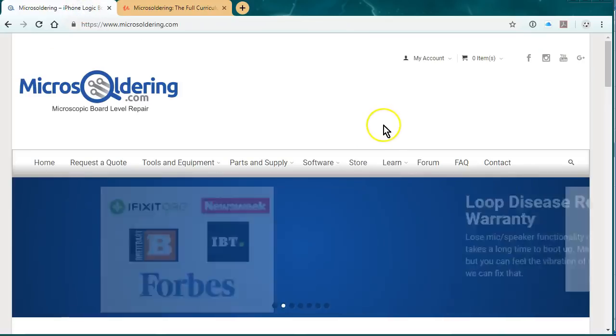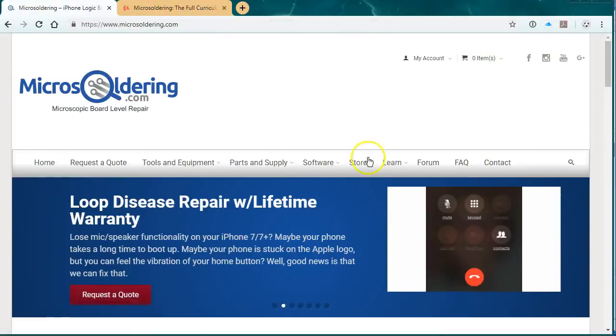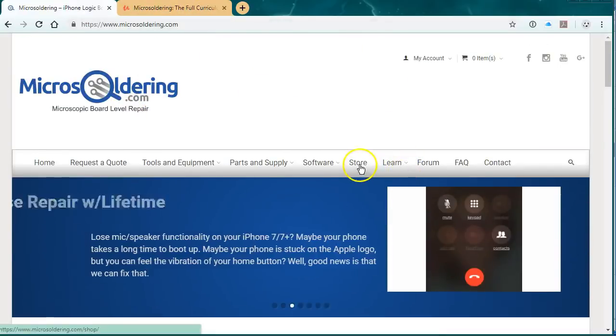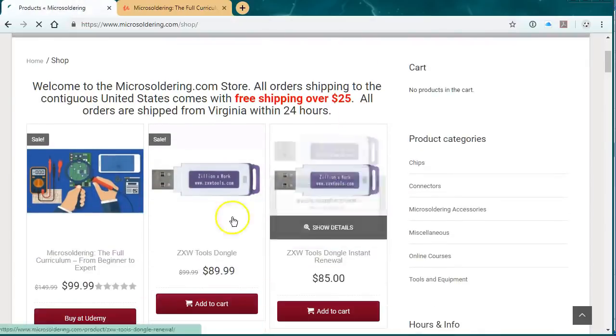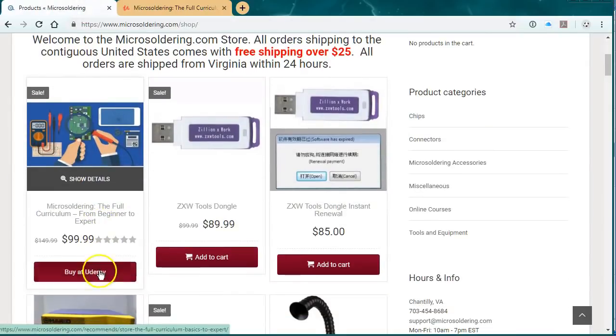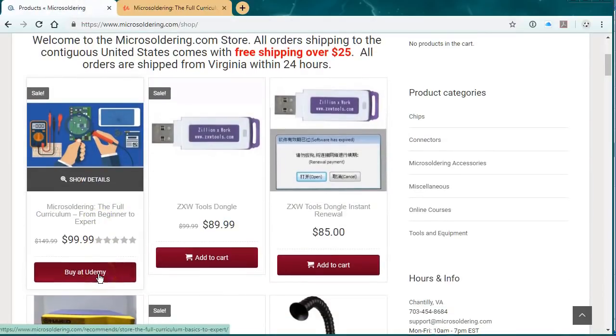I was also gonna say, in order to buy it with a discount, $50 discount, just get them micro-soldering.com, click on store, and then it's gonna be the first item on here, just click on buy to Udemy, and they'll give you the $50 off. Thanks.